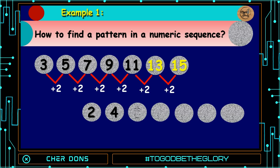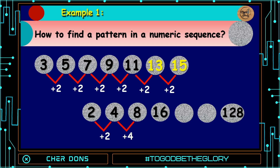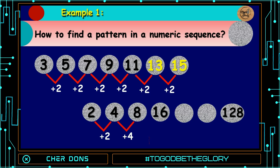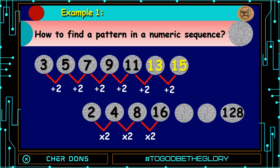The second given sequence is 2, 4, 8, 16, blank, blank, and 128. What happened between 2 and 4? We add up 2. How about 4 and 8? 4 plus 2 is 6 — nope, we need 8, so we must add 4. Between 8 and 16, we add 8 to get 16. As you can see, they're not the same, so it's not a pattern. How about we use multiplication instead? 2 times 2 is 4. 4 times 2 is 8. 8 times 2 is 16. So now we have a pattern — we multiply by 2. 16 times 2 is 32. 32 times 2 is 64. 64 times 2 is 128. So, our pattern is correct.